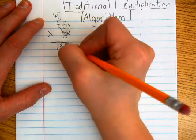We're going to multiply 4 times 3. 4 times 3 is 12. Hopefully you've memorized that.